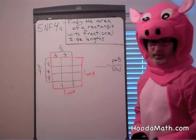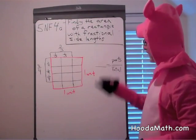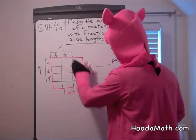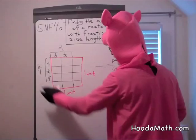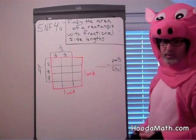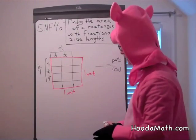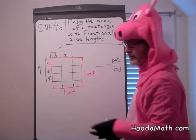Finding the area of a rectangle with fractional side lengths. This red shape is a one-by-one unit square. We're going to draw a rectangle inside of it and find the area.